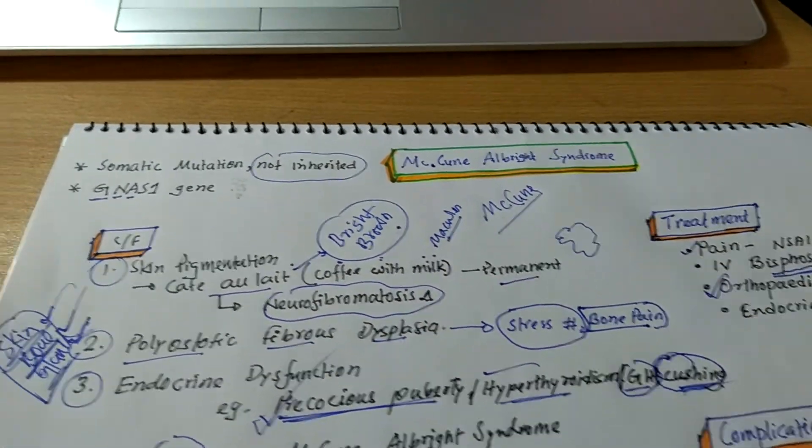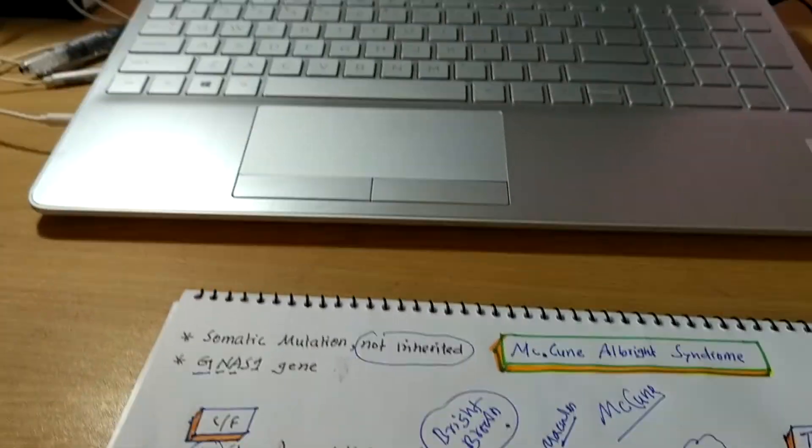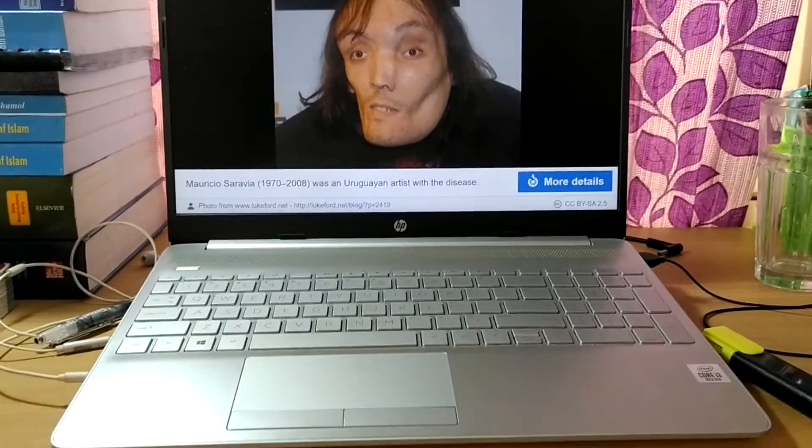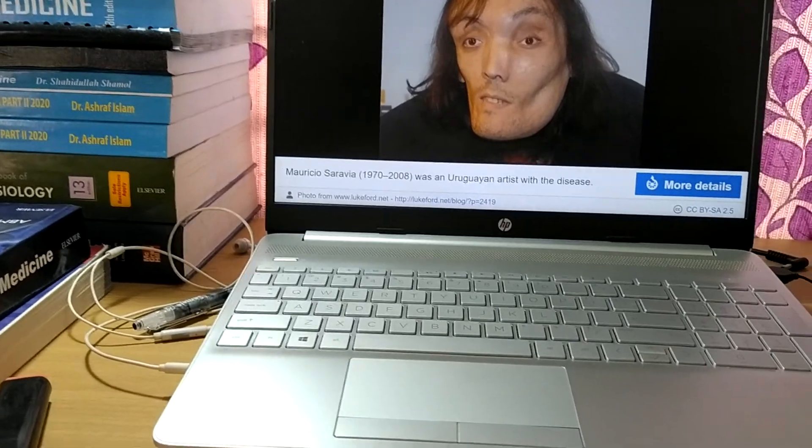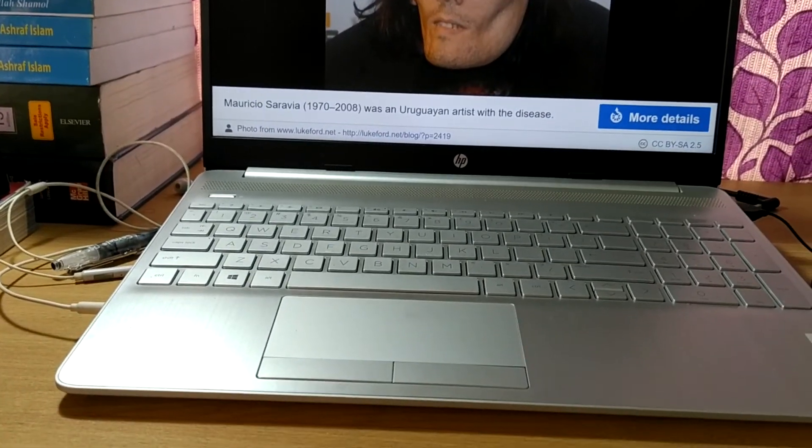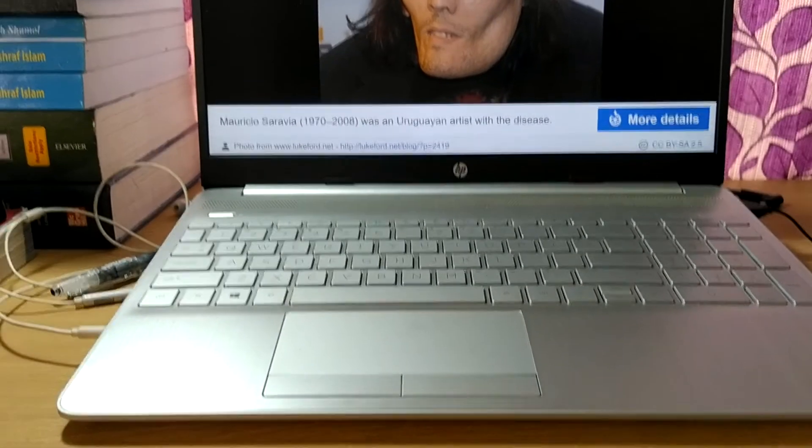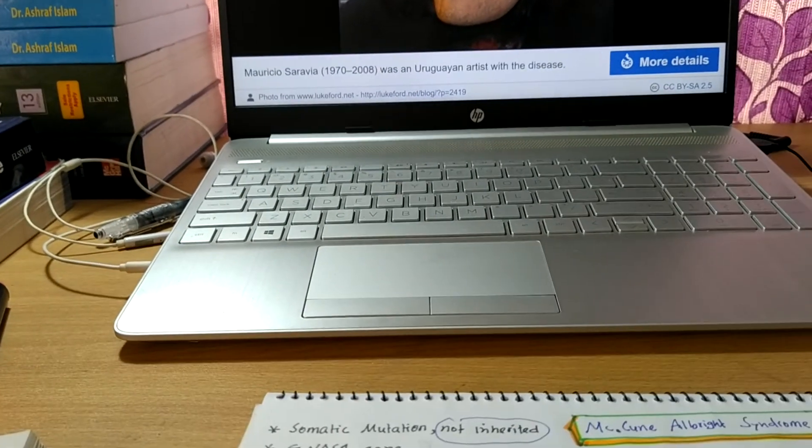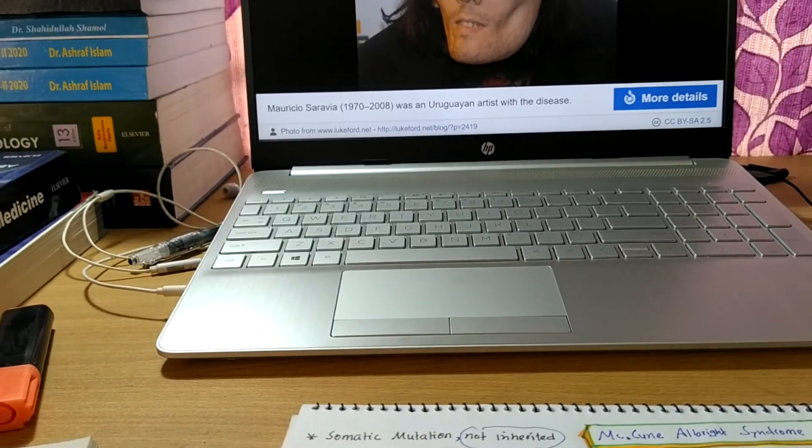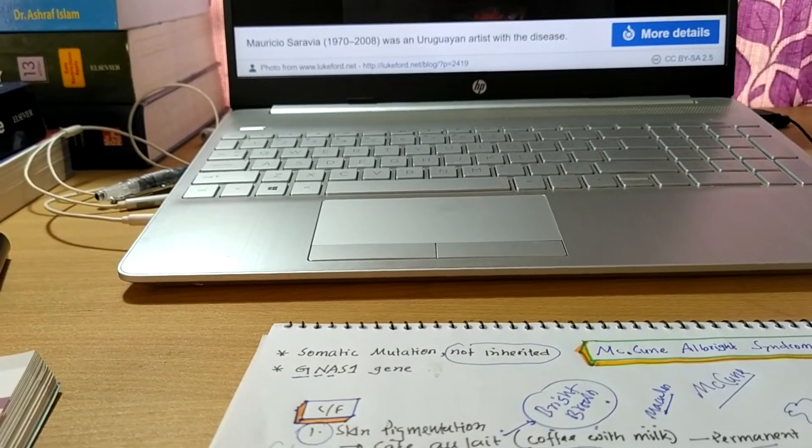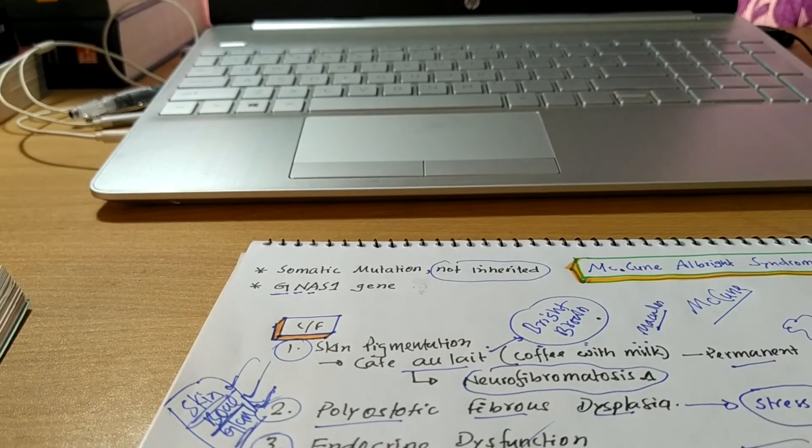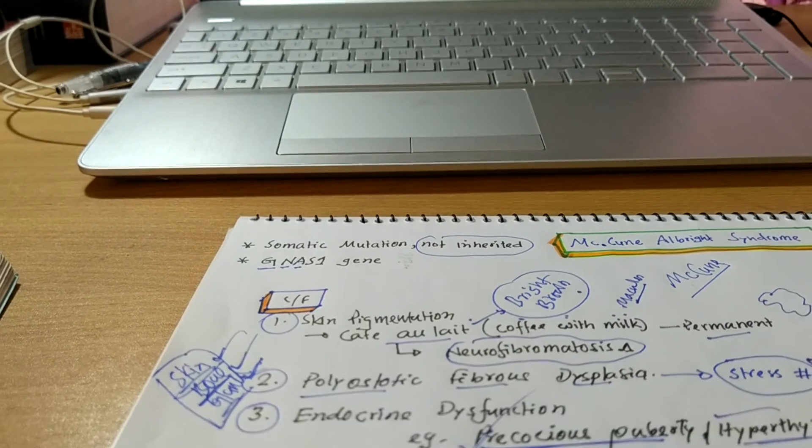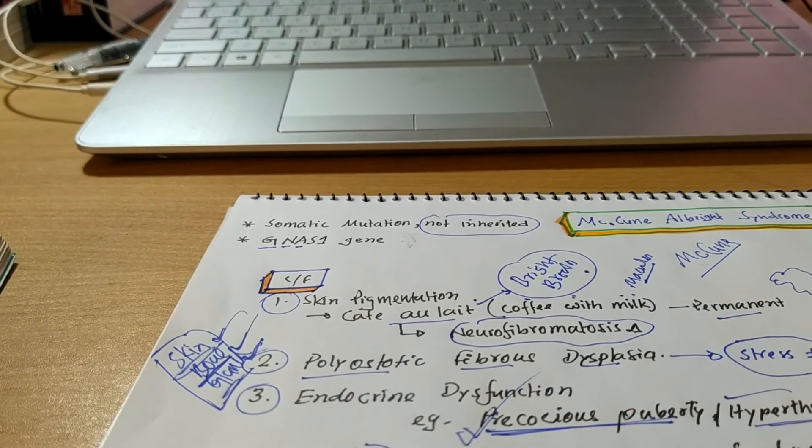Sorry. And at last, here is a picture of a great artist. Mauricio Saravia was an Uruguayan artist who suffered from McCune's Albright syndrome. So with due respect of this great man and all the people who are suffering from this disease, it is ended the lecture.